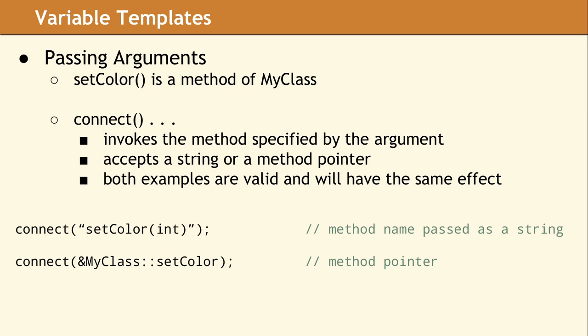By changing the code to pass a method pointer, the parameters for the slot method will automatically be validated by the compiler. It's always better to have an error show up at compile time rather than runtime.